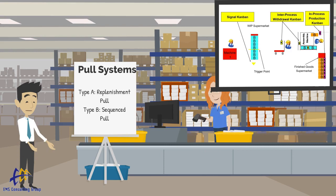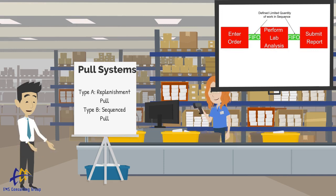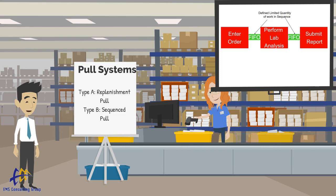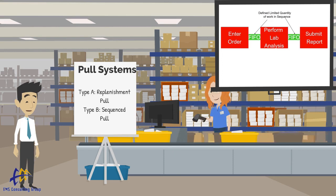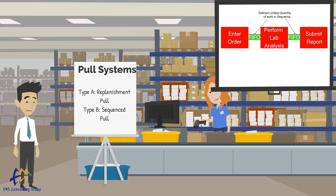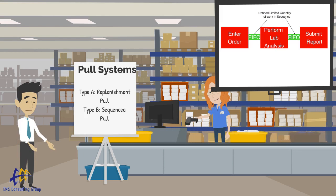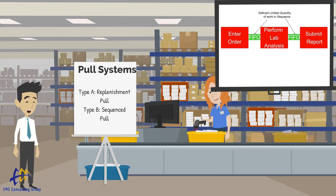A Type B pull system is often called Sequenced Pull or Sequential Pull, and it usually involves what is called a FIFO lane. FIFO stands for First In, First Out. Under a Type B system, two processes are connected by a visual apparent area — known as a FIFO lane — containing a defined, limited quantity of parts, jobs, or units of work in sequence. The supplying process dictates the sequence of work, and the customer or downstream process processes the work in this identical sequence. This type of pull system is more flexible in that it can work with administrative or product-based processes, while a Type A system typically works with physical inventory.